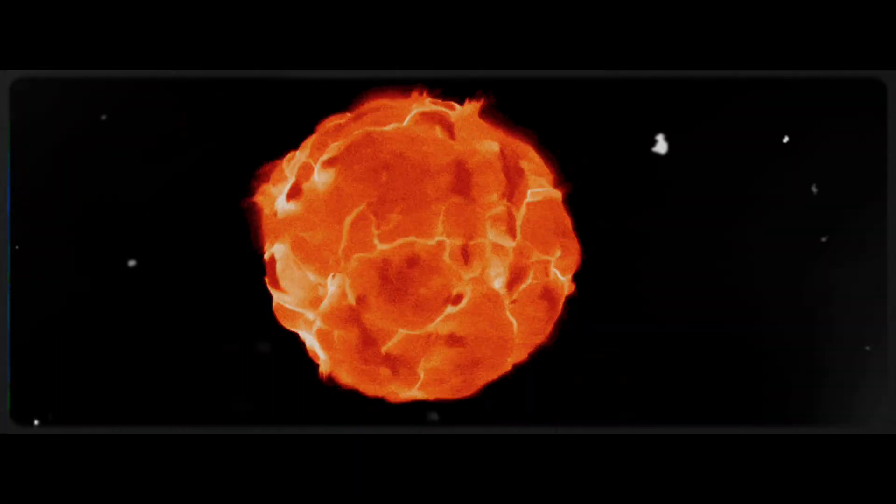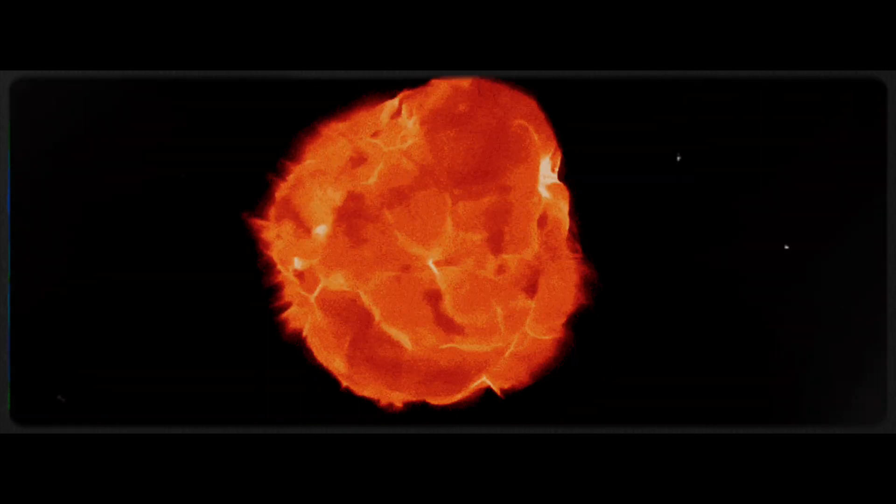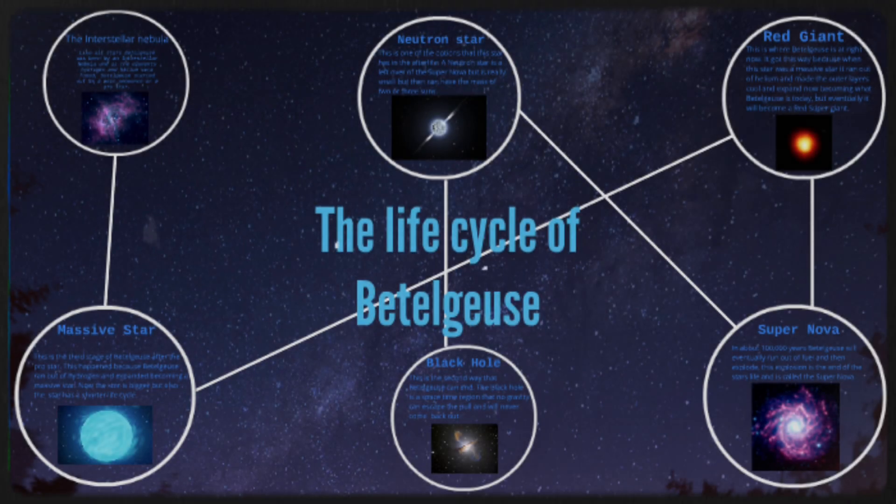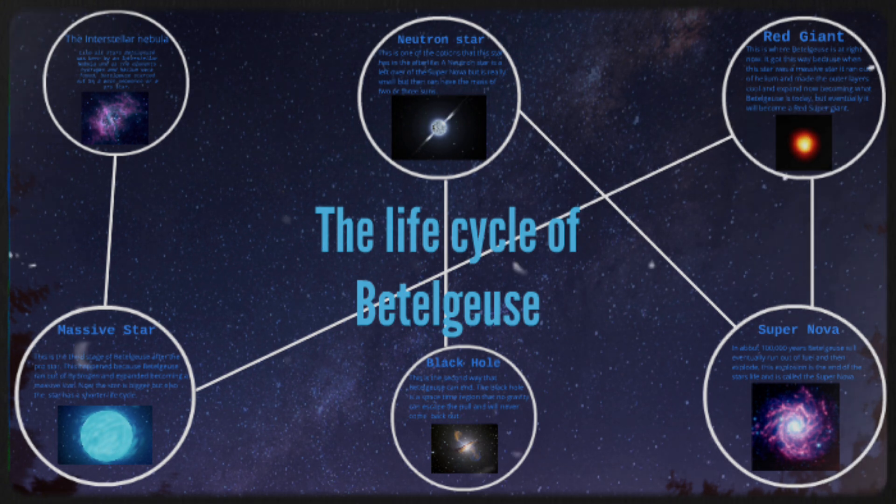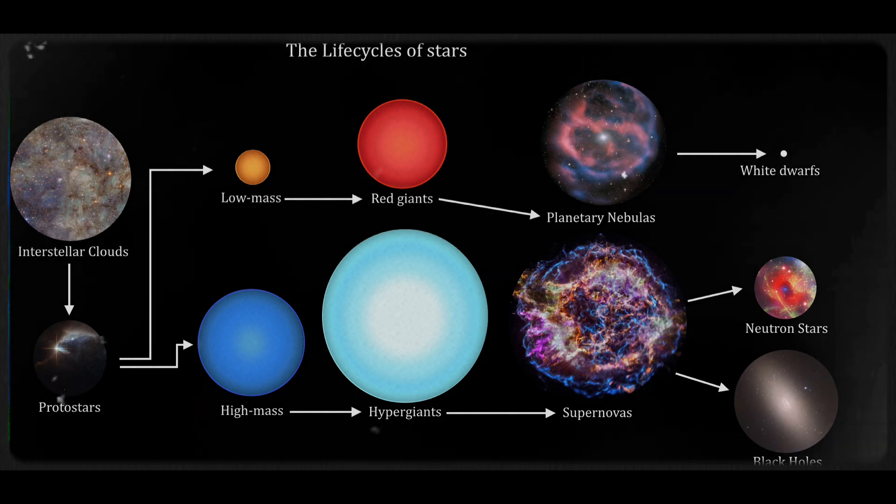The forced pulsation, which contributes to Betelgeuse's mass loss, is influenced by the continuous energy loss from shock heating and mass ejection. These findings suggest that Betelgeuse's life cycle is more dynamic and less predictable than previously thought, prompting scientists to reconsider their models of how stars evolve.